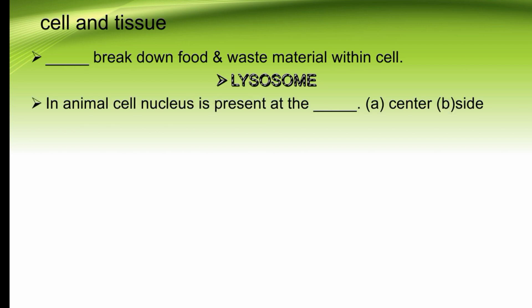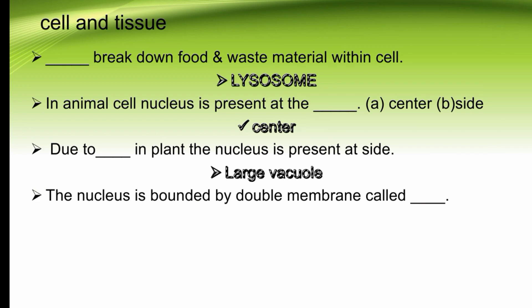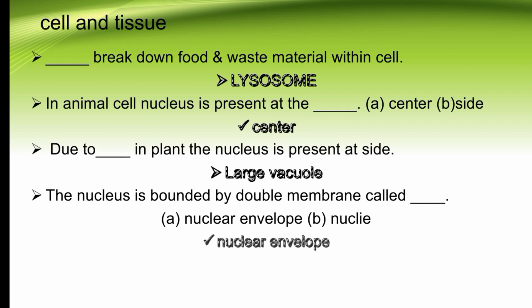In an animal cell, the nucleus is present at the dash — center or side. The nucleus in an animal cell is always present at the center of the cell. The right option is A. Due to large vacuoles in plants, the nucleus is pushed to the side. The nucleus is bounded by a double membrane called dash — nuclear envelope. The nucleus is bounded by a double membrane called the nuclear envelope. The right option is nuclear envelope.